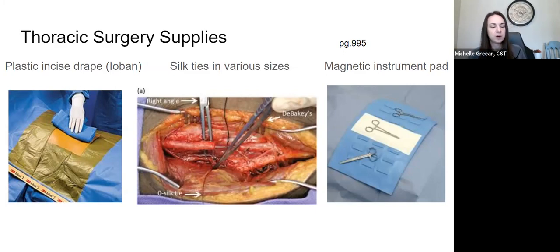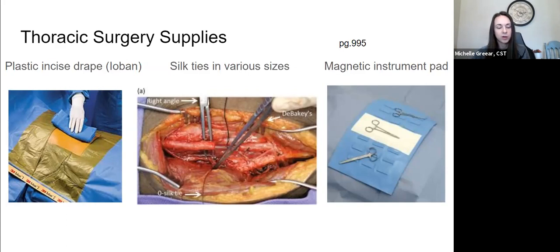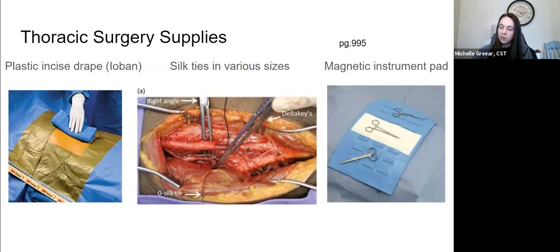Calipers to measure all these grafts. Flip over to page 364 and look at your wolf suction — it's a really long yankauer suction, very commonly used in VATS thoracic procedures. They've got a similar one that's a long version of the pool suction. Page 365 covers thoracotomy instruments — we're opening the chest, not doing minimally invasive. With the rib spreader and the sternal saw — very cool.